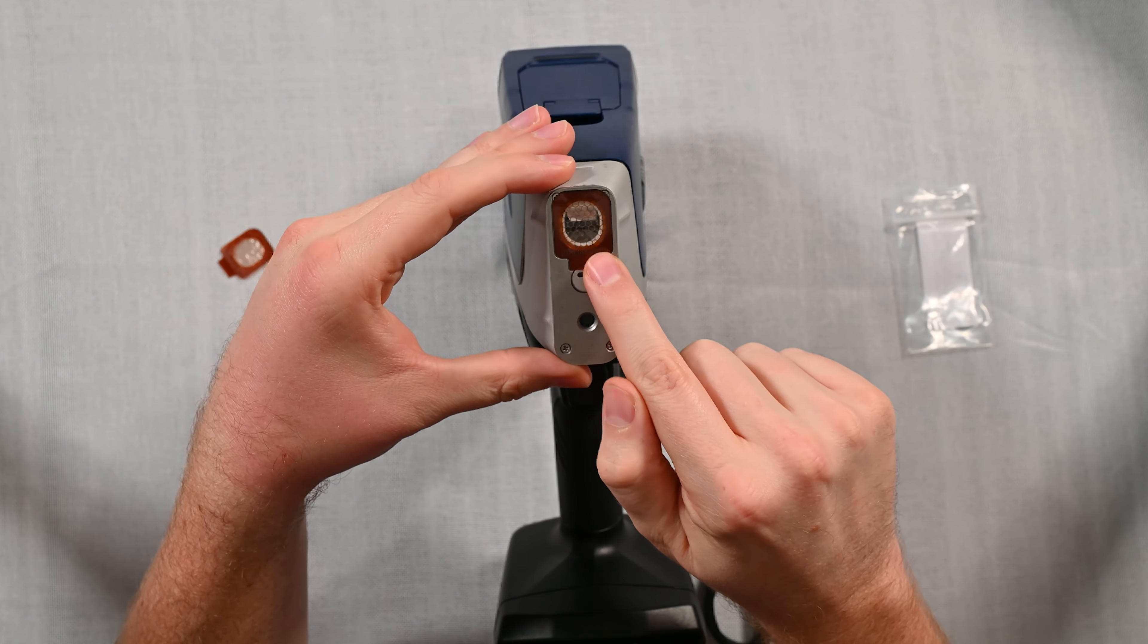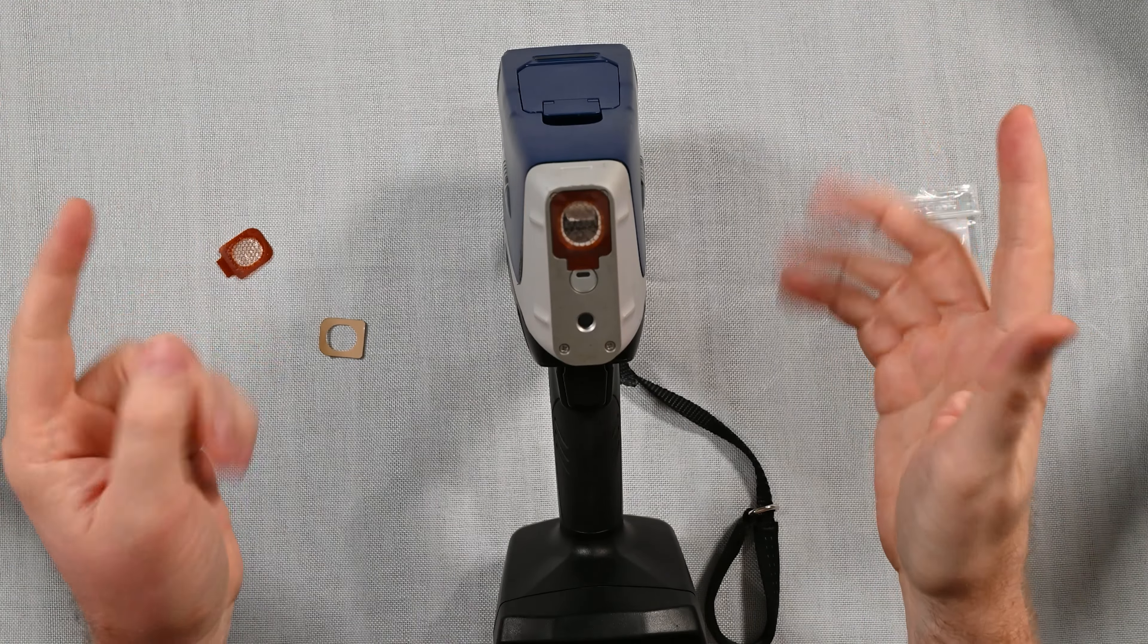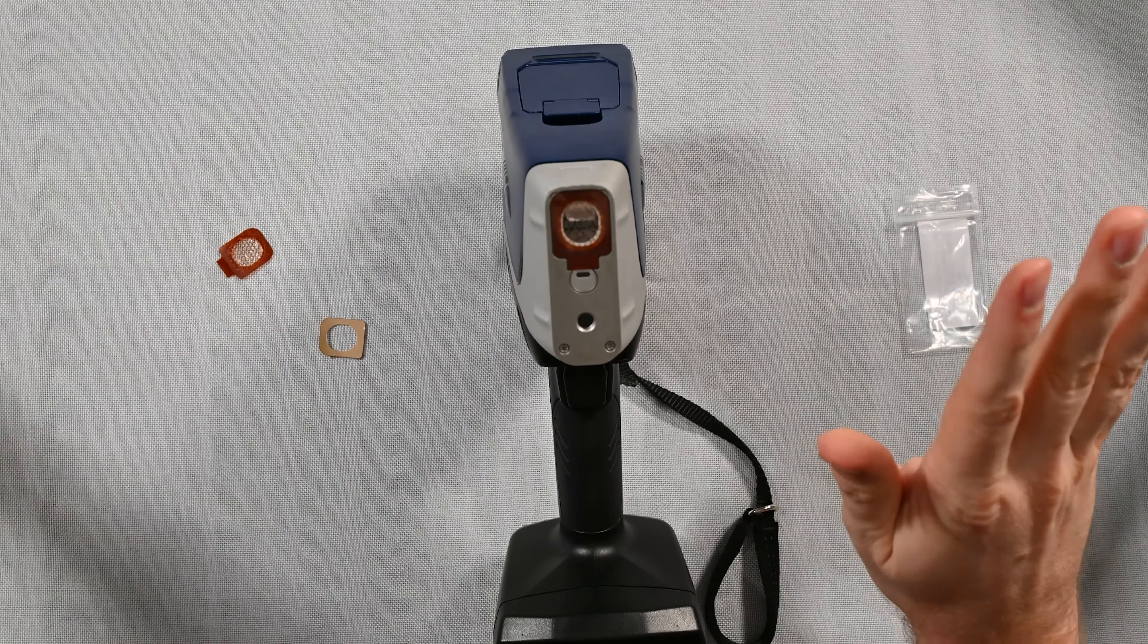And there you go. You have a brand new clean window on your Vantacore and that's how you do it. If you're looking for more windows you can find them on alageek.com. See you next time.